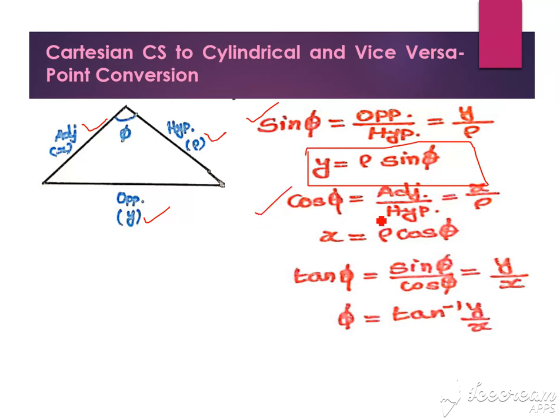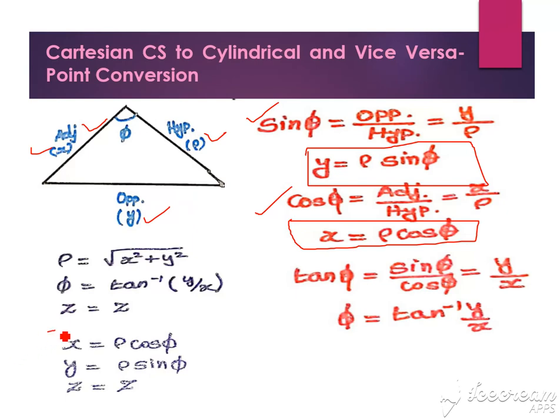Similarly, cos phi is adjacent side divided by hypotenuse. Adjacent side is x and hypotenuse is rho, from this we can find the x value. So from this we found the Cartesian values from cylindrical. Z is the same for both cases, so z equals z.